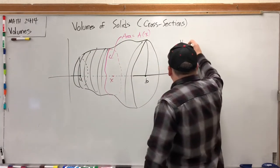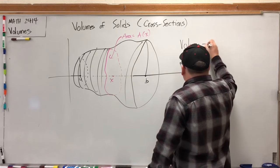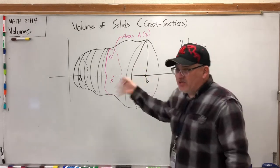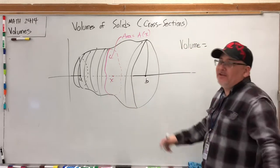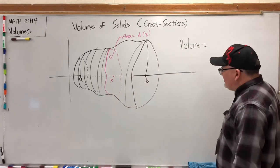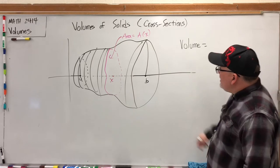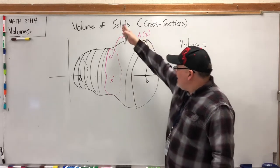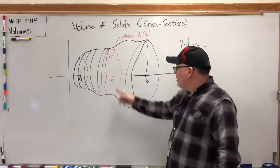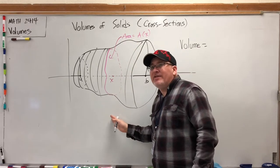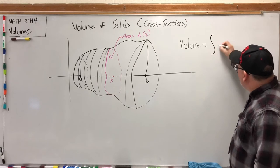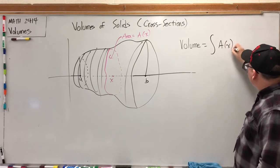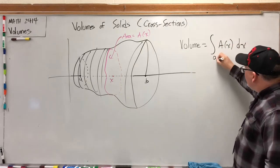Without going through the Riemann sum, which would just involve cutting this into a bunch of little skinny slices and setting up a sum and taking a limit, if we know the function that calculates the area of the cross-section when we slice the solid at a certain point on the x-axis, then the volume is going to be the integral of that area function, A(x) dx, from A to B.